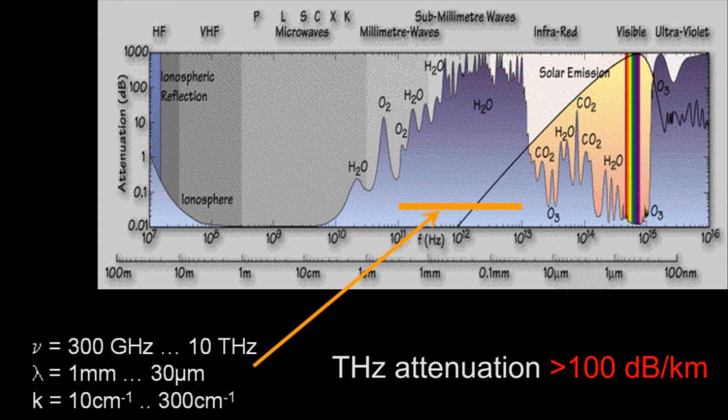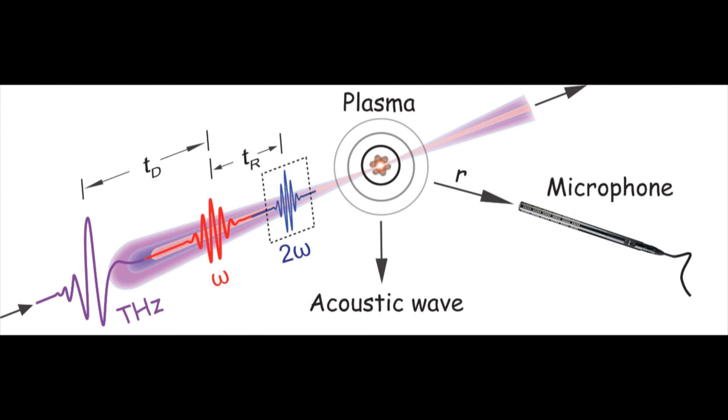Here at RPI, we've found a method that takes advantage of the atmospheric spectral windows, using the acoustic waves emitted from a laser plasma formed in air to carry the information of the terahertz electromagnetic pulse.